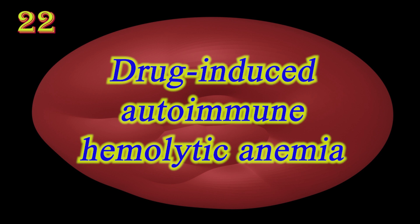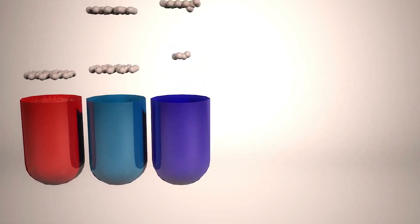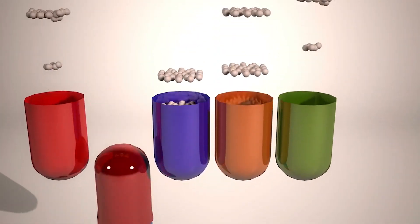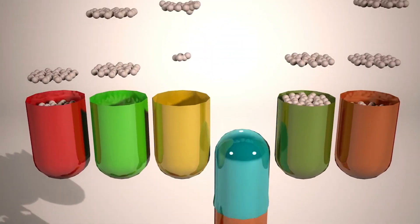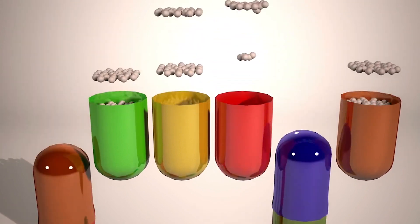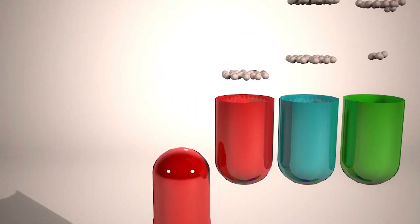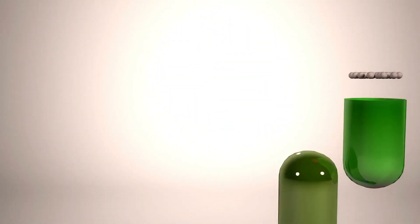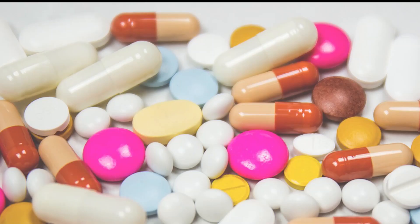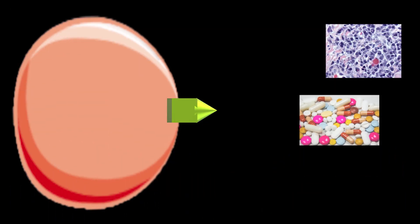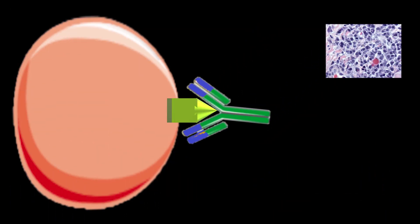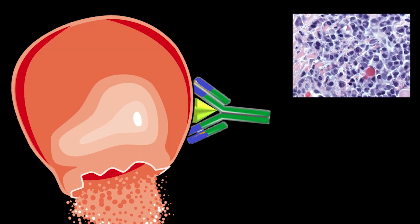Drug-induced autoimmune hemolytic anemia: in some cases a drug can cause the immune system to mistakenly think the body's own RBCs are dangerous foreign substances. Antibodies then develop against the RBCs, attach to them, and cause them to break down too easily. More than 150 drugs can cause this type of hemolytic anemia.